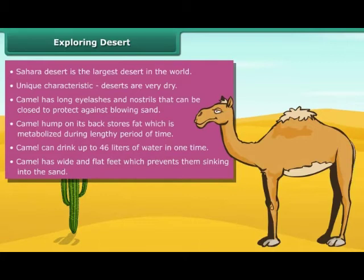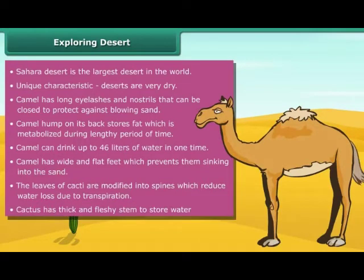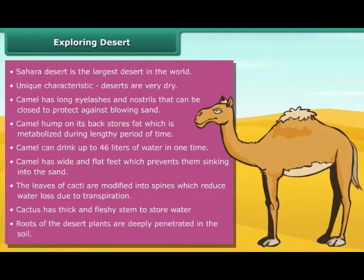Plants like cacti also show various adaptations to survive in a dry and hot environment. The leaves of cacti are modified into spines, which reduce water loss due to transpiration. The cactus has a thick and fleshy stem to store water. Roots of desert plants deeply penetrate the soil to absorb water.